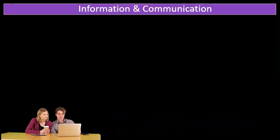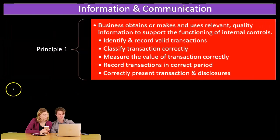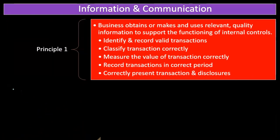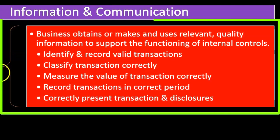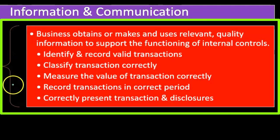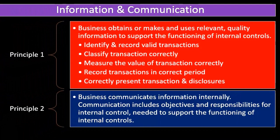Next we have information and communication. Principle number one: the business obtains, makes available, and uses relevant, quality information to support the functioning of internal controls. This includes: identify and record valid transactions, classify transactions correctly, measure the value of transactions correctly, record transactions in the correct period, and correctly present transactions and disclosures.